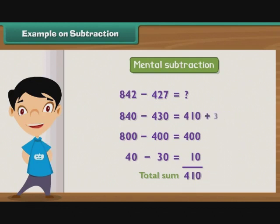But we subtracted an additional 3 when we subtracted 430 instead of 427. So we add 3 to the difference. We left out 2 when we subtracted 430 from 840 and not 842. So we add 2 more to the difference. Thus, the result of subtracting 427 from 842 is 415.